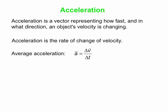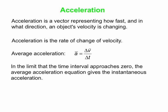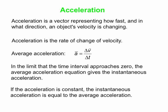Expressed as an equation, we can say the average acceleration is delta V — that's the change in velocity — over delta T, the time interval during which that change in velocity occurs. In the limit that the time interval approaches zero, the average acceleration can be interpreted as the instantaneous acceleration. And in situations where the acceleration is constant, the instantaneous acceleration is equal to the average acceleration.